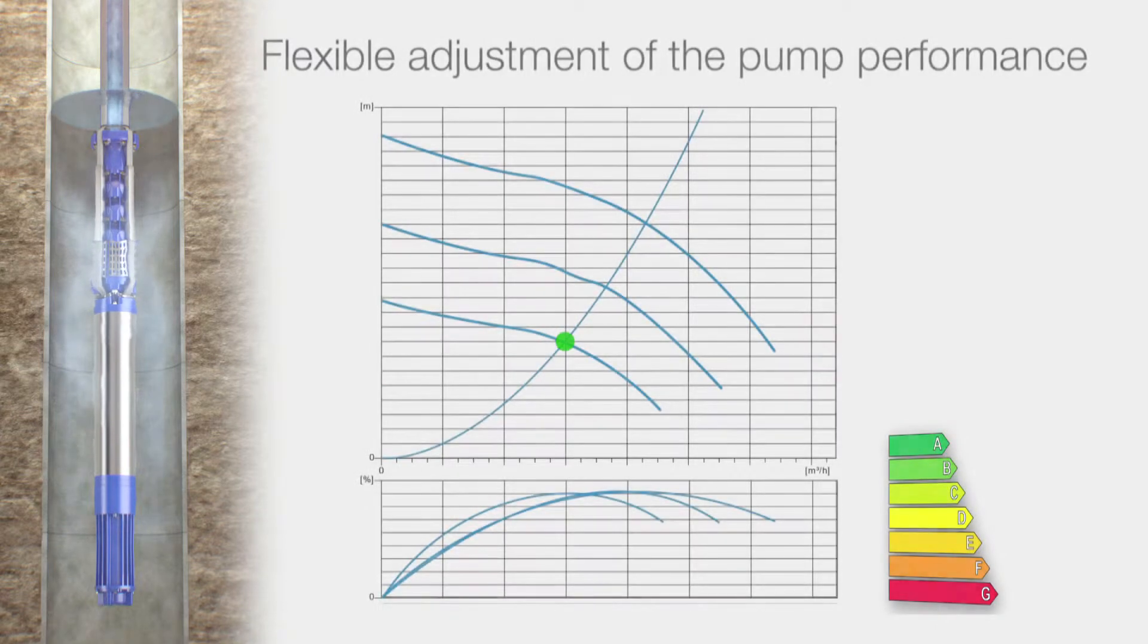Number 3 – Flexible adjustment of the pump performance. The system solution of an IPM motor also includes a high efficiency frequency converter, with which the rotational speed of the motor and the pump performance can be flexibly adjusted, completely without any losses.